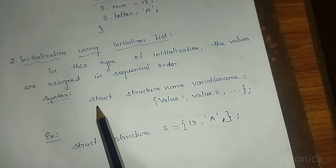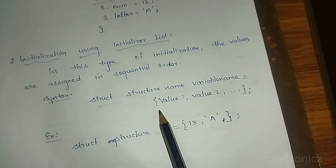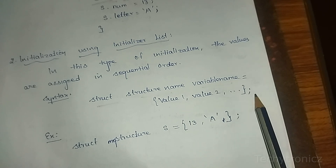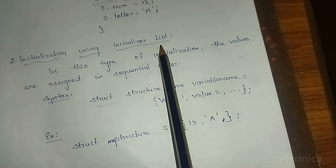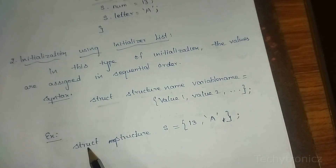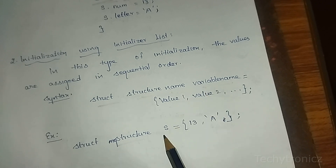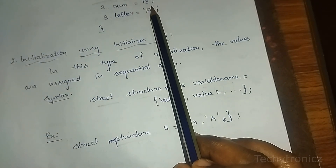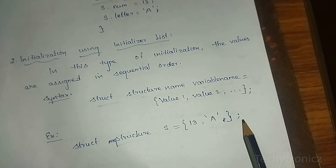The syntax for initialization using the initializer list is: struct structName variableName = {value1, value2, ...}; — close with a semicolon. The values are in sequential order. For example: struct myStruct s = {13}; where 13 is assigned to num.